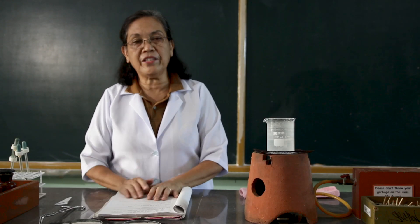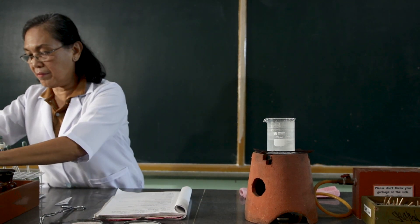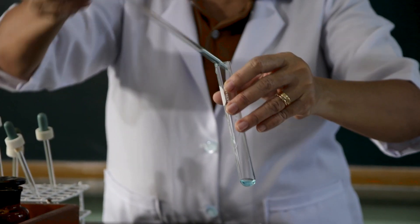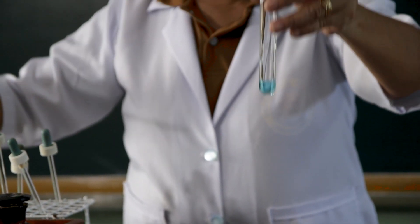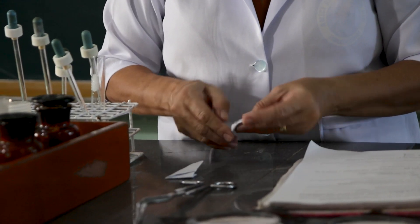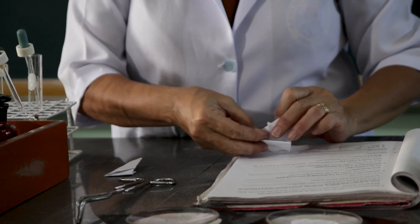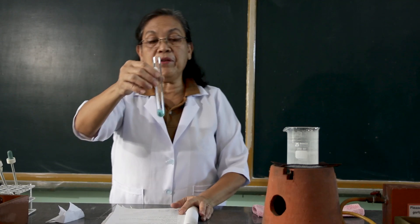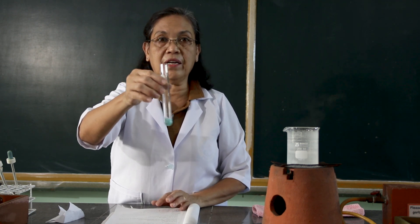And we will prepare another salt by the reaction between copper sulfate solution and magnesium ribbon. This is the copper sulfate solution and we will add this with a magnesium ribbon. I want you to observe what happens. We will decant the supernatant and allow it to be evaporated on the water bath.